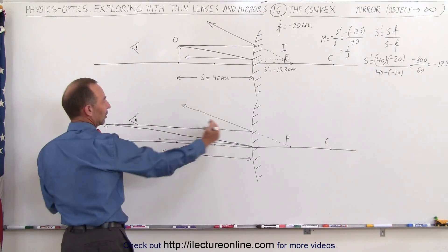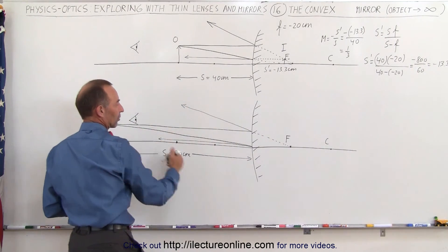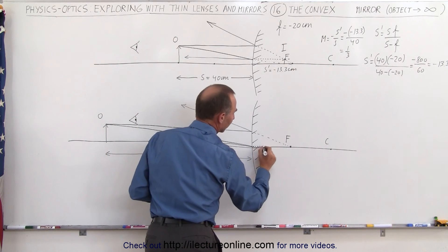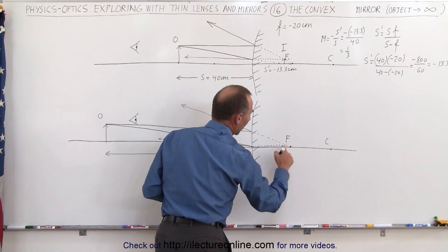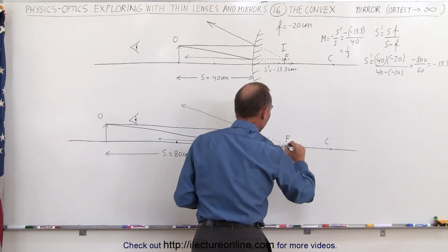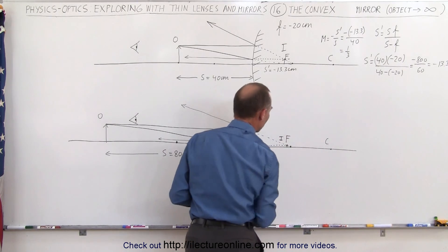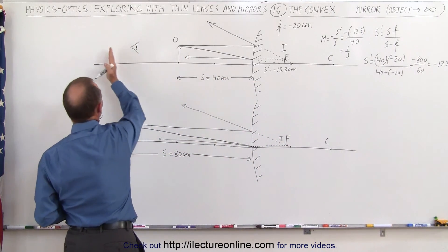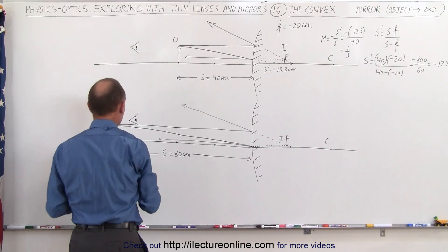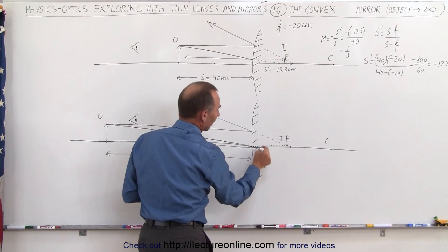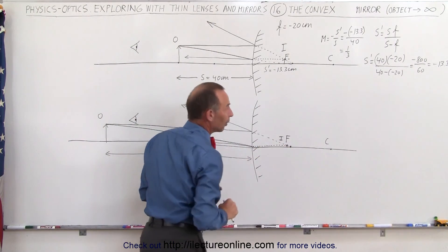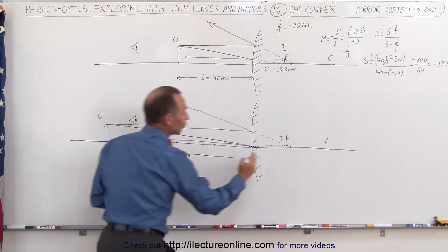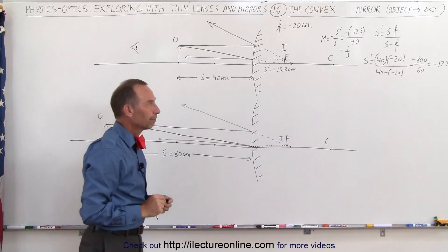The observer will see the rays coming in these directions, and it will appear as if both rays came from back here somewhere. Where they meet, that's where the brain will place the image. Notice that as the object goes farther and farther from the mirror, the image will form closer and closer to the focal point. In the limit as the object goes to infinity, the image will form at the focal point.